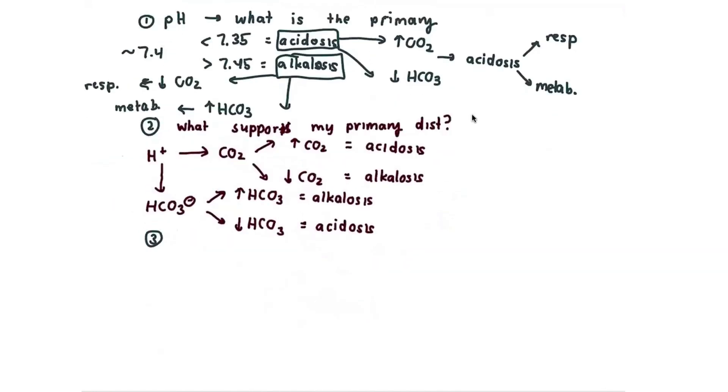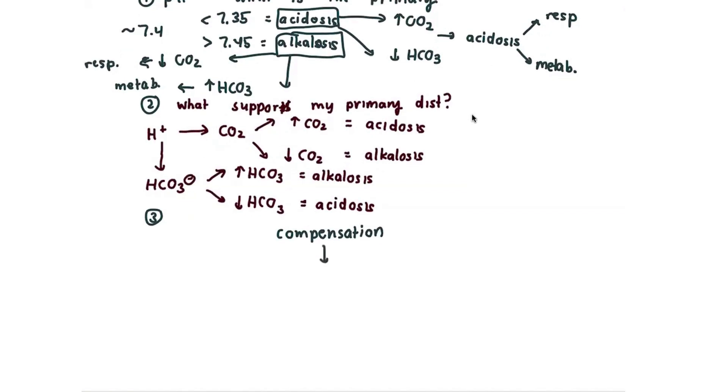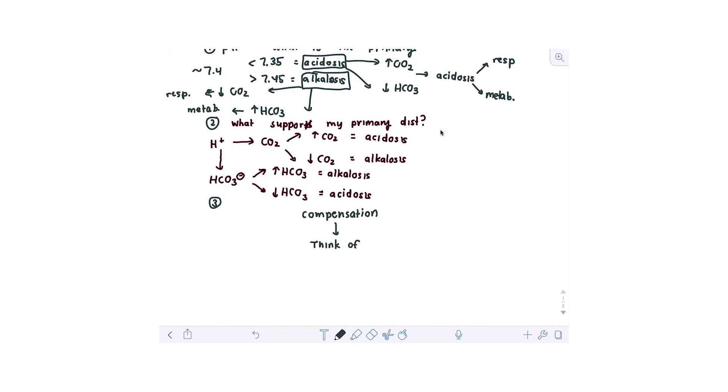And so then comes the third step. And the third step is going to actually try to decipher what is going to be the compensation. That's the third step: what is the compensation? Now, when you're talking about the compensation for an acidosis or alkalosis, I like to ask the question, think of the organ.